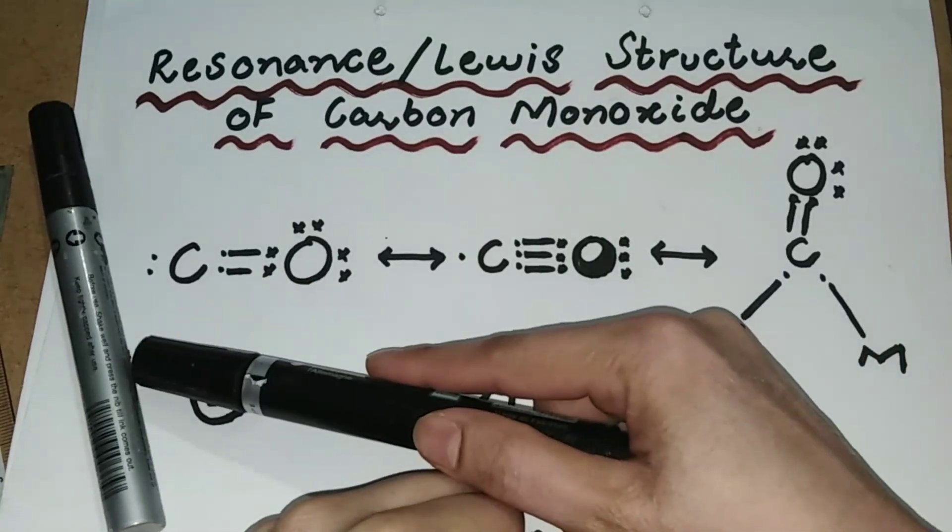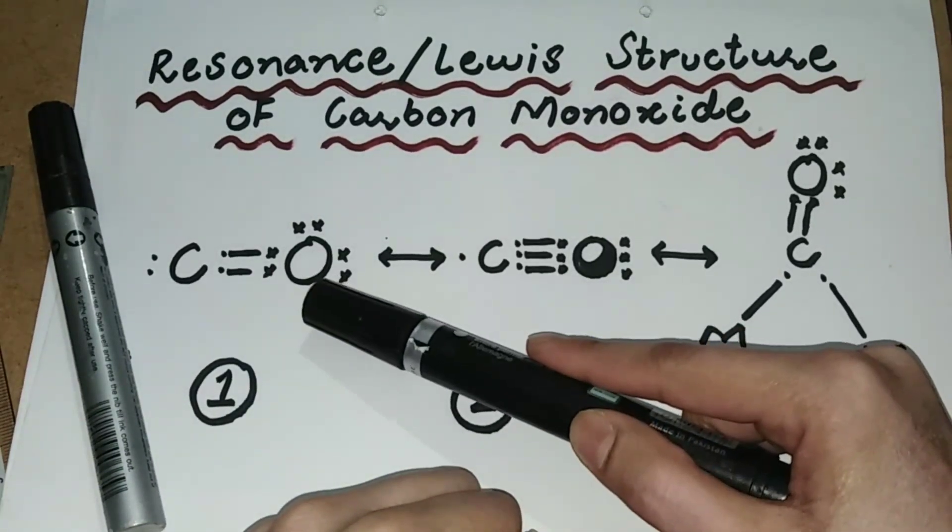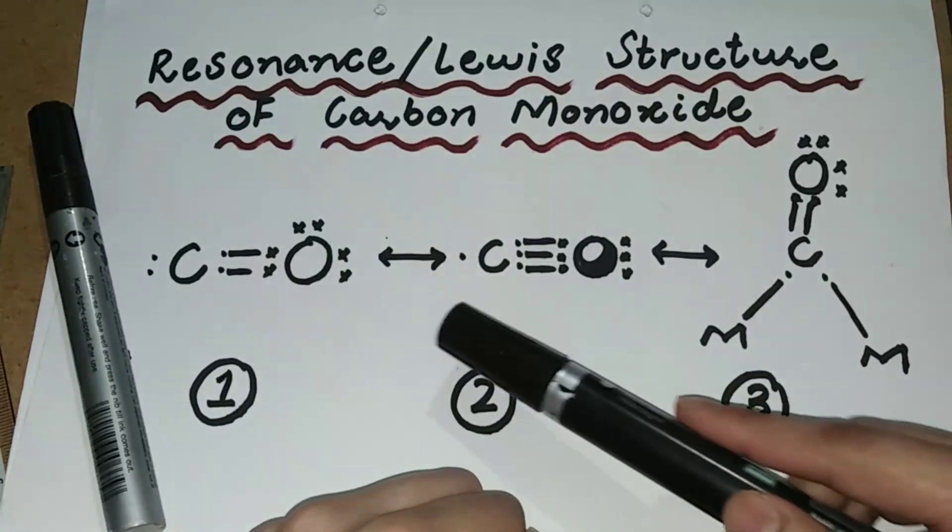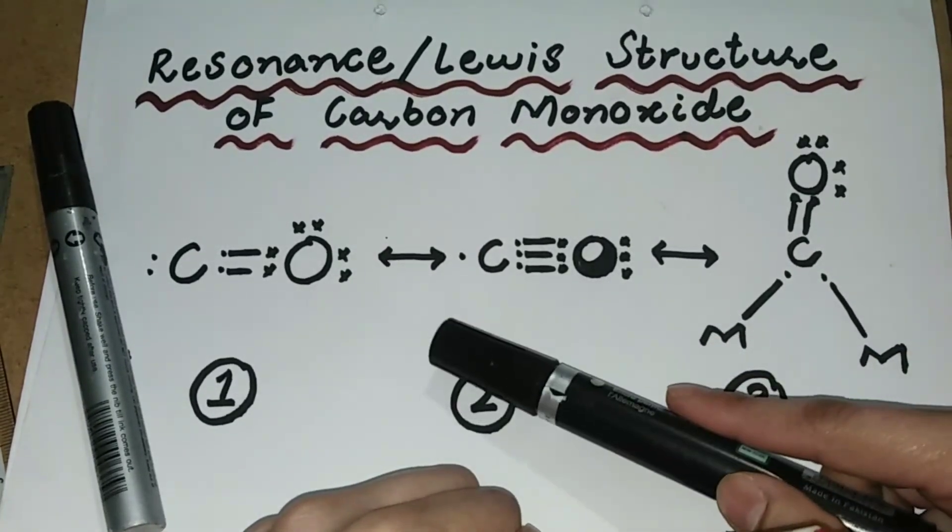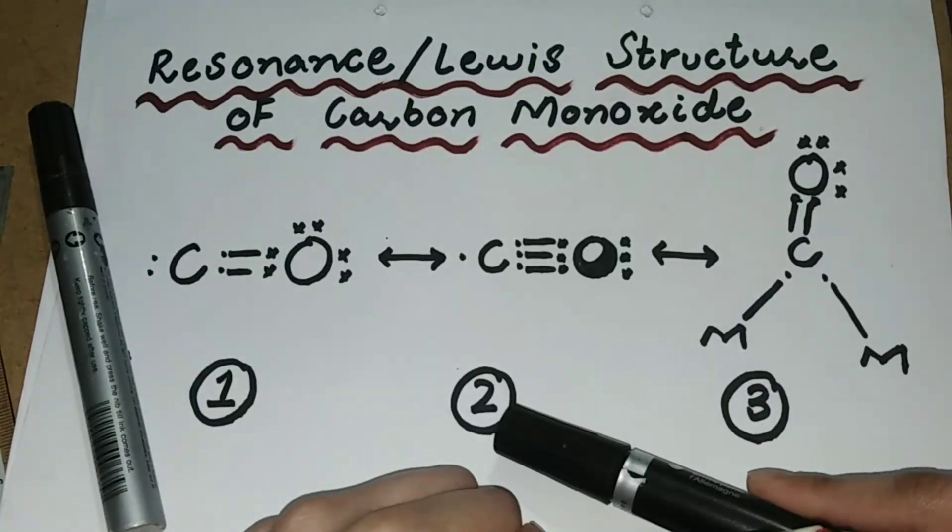Carbon has one pair of electrons and oxygen has two pairs of electrons on it. With the help of this sign, two resonance structures are interrelated with each other. In the second resonance structure...